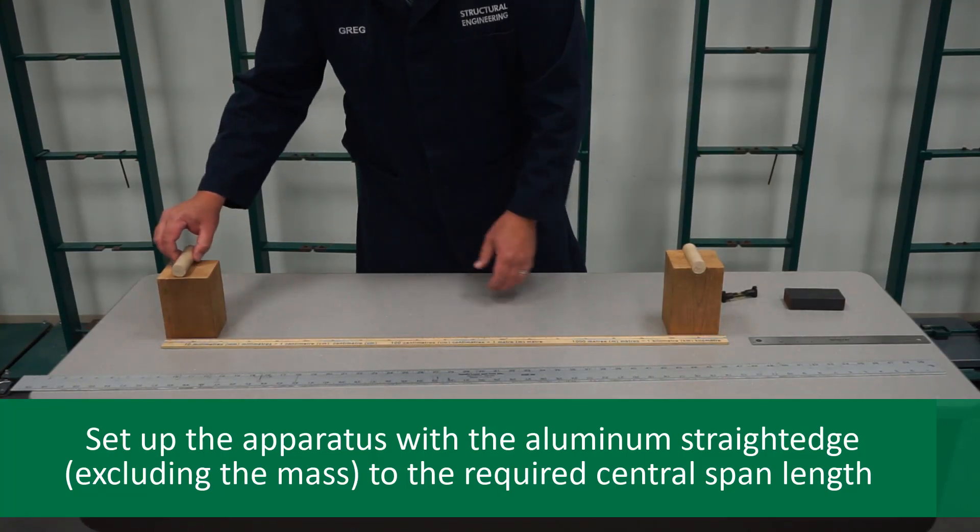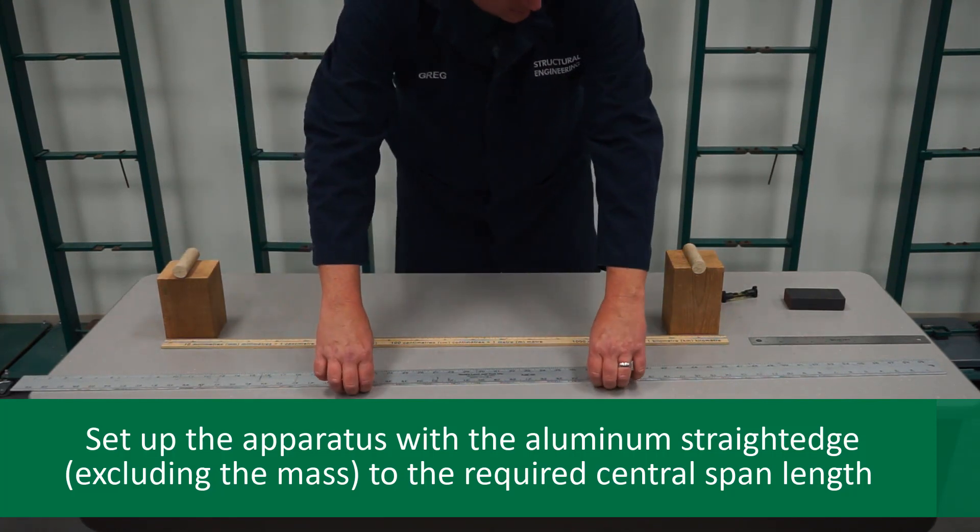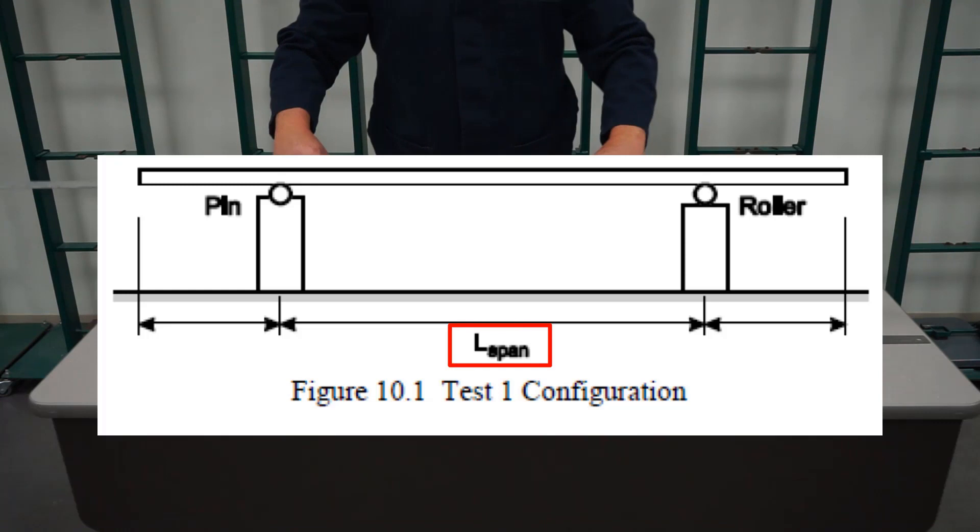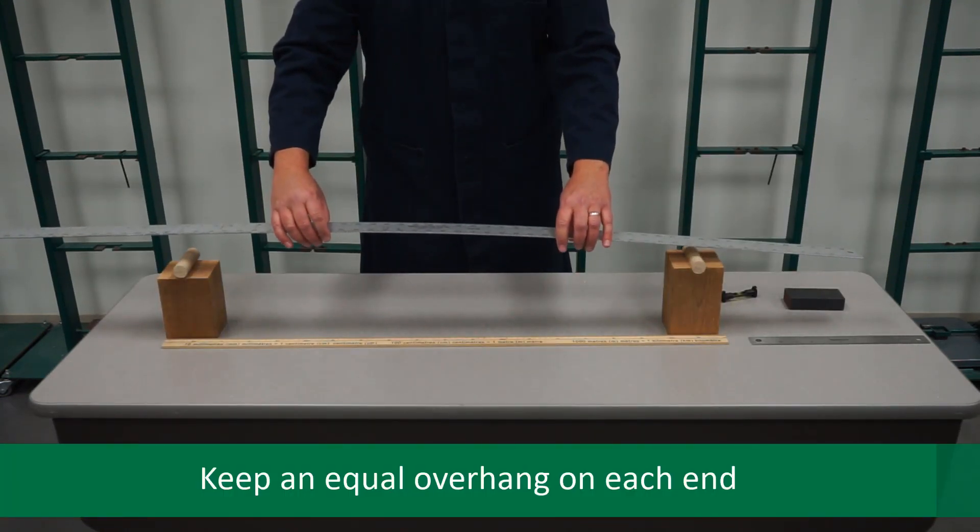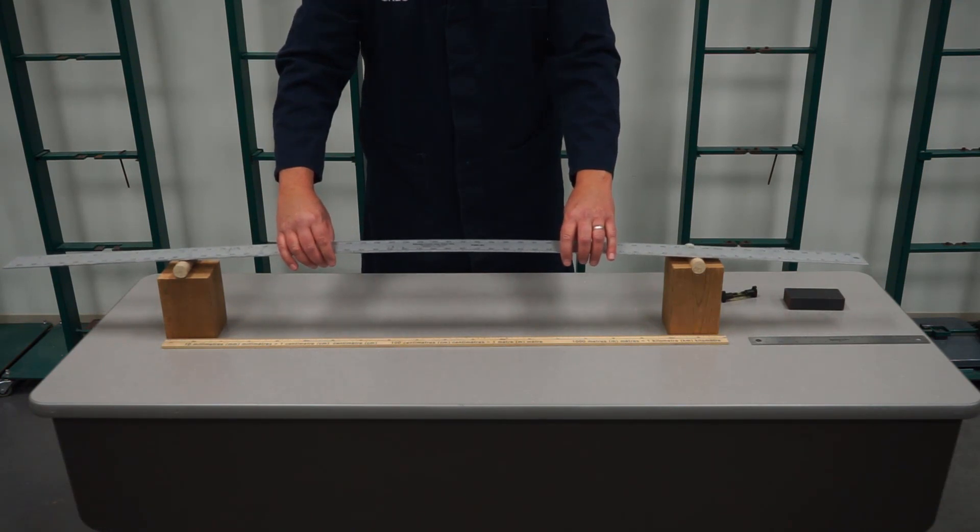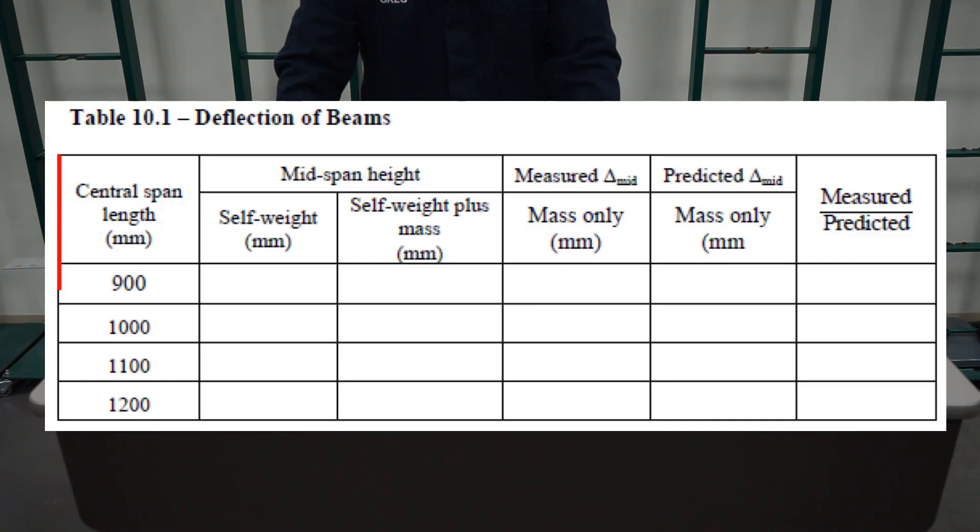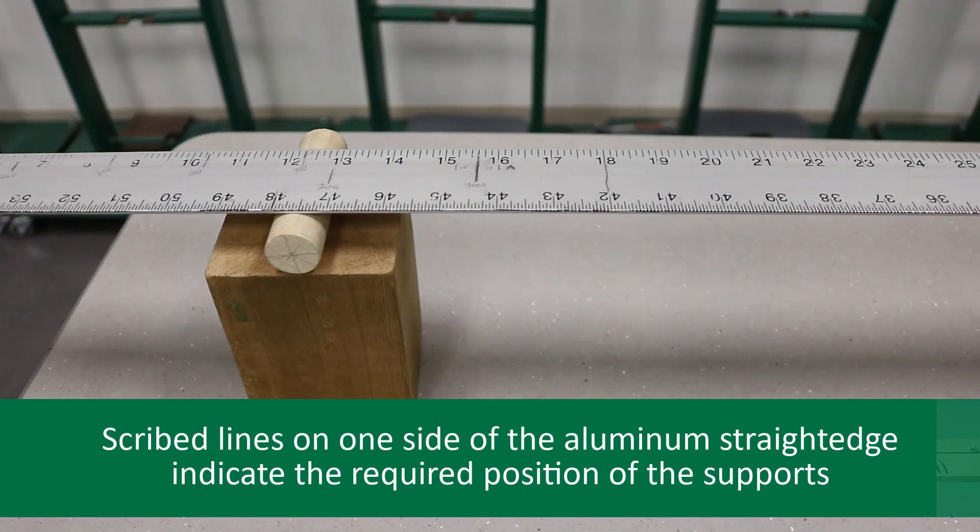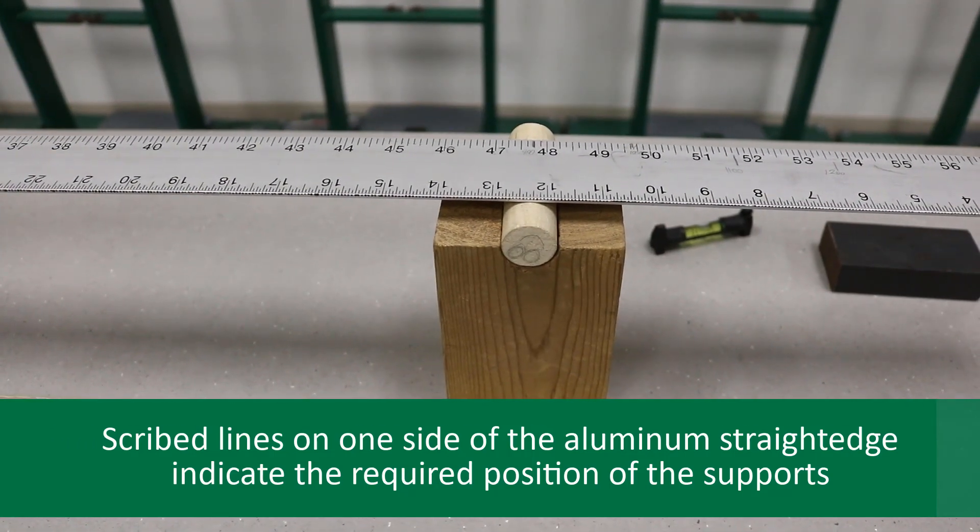For the actual procedure, first set up the apparatus with the aluminum straightedge by excluding the mass to the required central span length as shown by L-span in figure 10.1. Keep an equal overhang on each end. See the first column of table 10.1 for the required central span length. Scribed lines on one side of the aluminum straightedge indicate the required position of the supports.